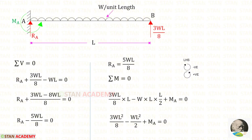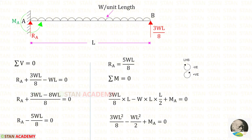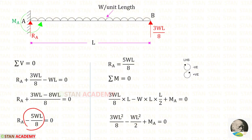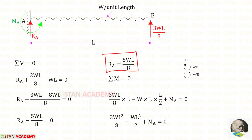Now let us apply sigma V = 0 to find RA. RA and Rb are acting upwards, so both are positive. The UDL is acting downwards, so it is negative, and multiplying with distance L gives WL. Taking LCM as 8: 8×WL = 8WL. Then 3WL − 8WL = −5WL. Taking −5WL/8 to the other side gives RA = 5WL/8.